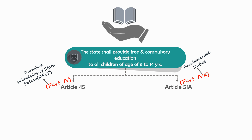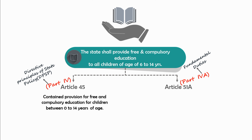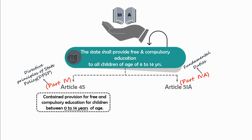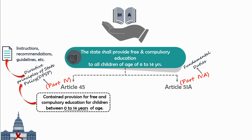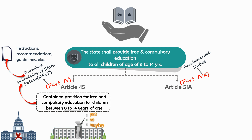Before making the change, Article 45 contained a provision for free and compulsory education for children between 0 to 14 years of age. So it was already written that children of 0 to 14 years would be given free education. Then what was the need for Article 21A? Article 45 is given under DPSP. In DPSP, constitutional instructions, recommendations, guidelines, and protocols are given which help the state in making policies and laws. But it is not enforceable by the court — meaning if the state does not want to follow these instructions of DPSP, no action can be taken against the state.